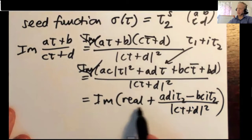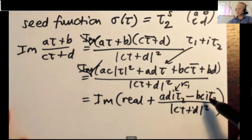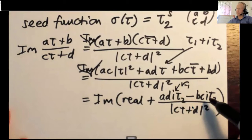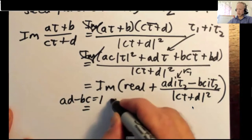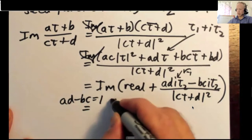So you see the imaginary part of something real plus this stuff with the i here where i is squared minus one, you get AD minus BC tau two over this stuff. Because AD minus BC is one in SL, we just get tau two over C tau plus D squared.